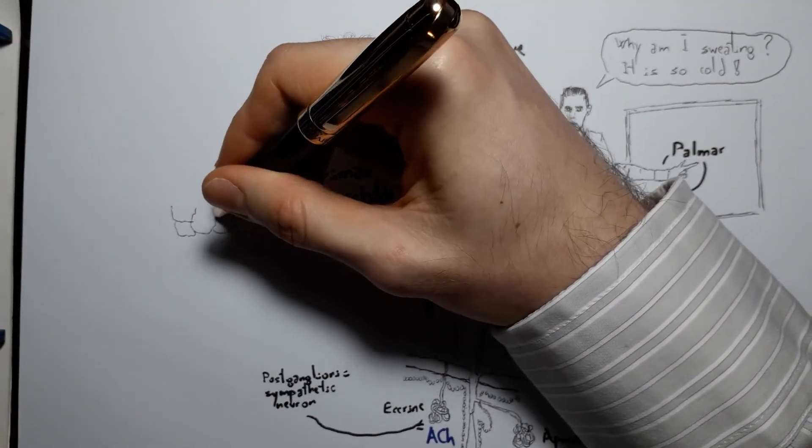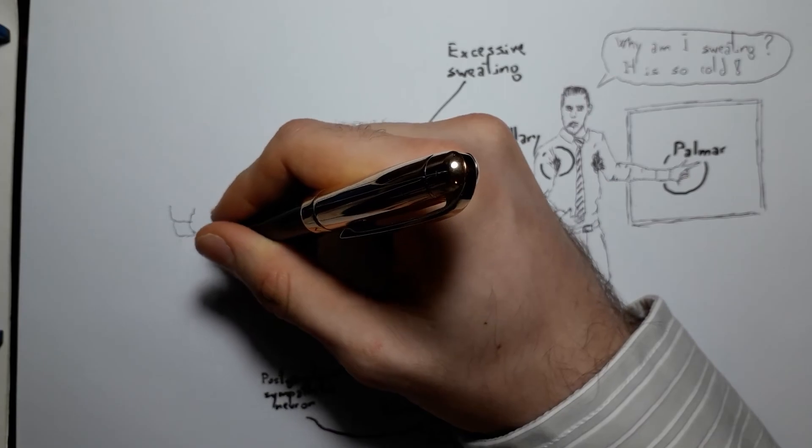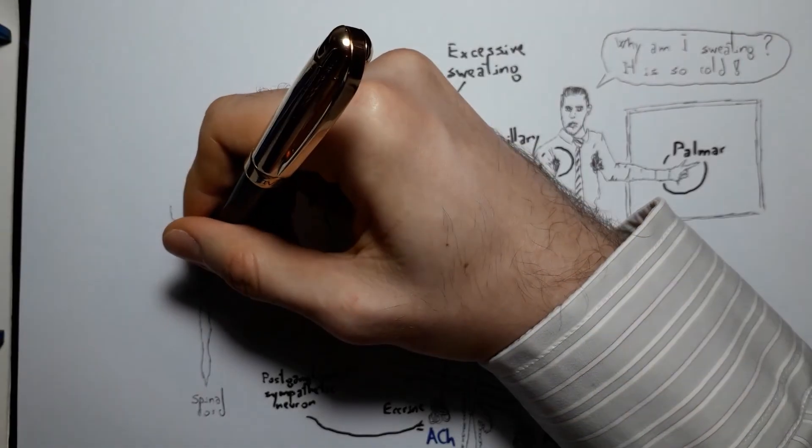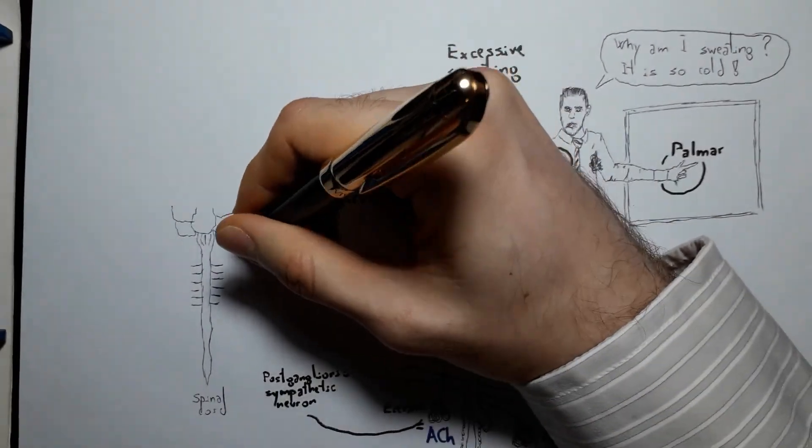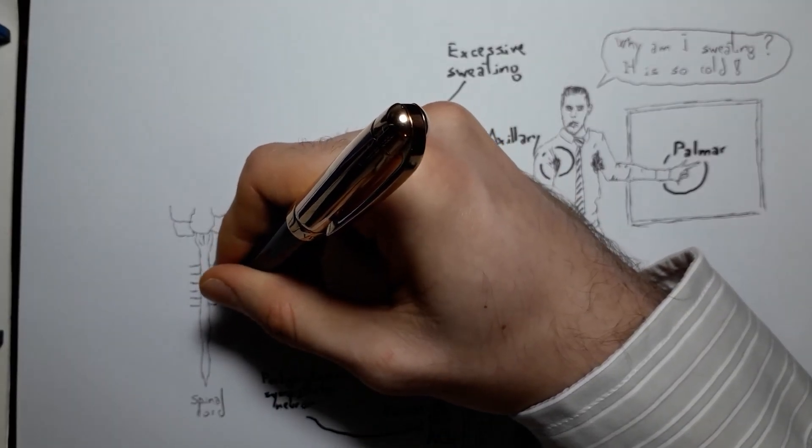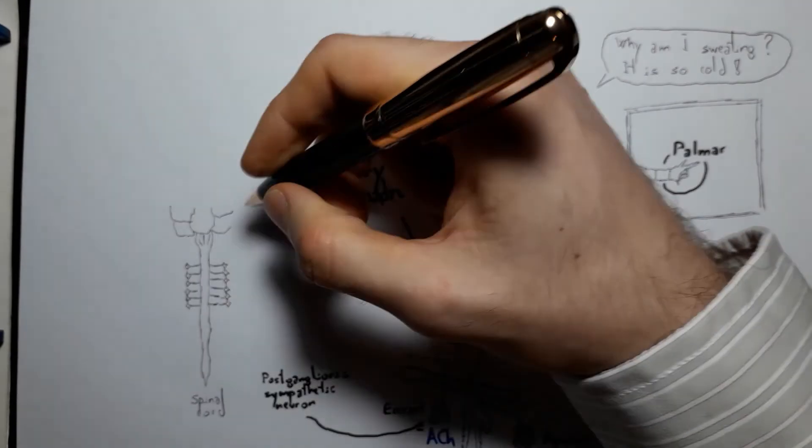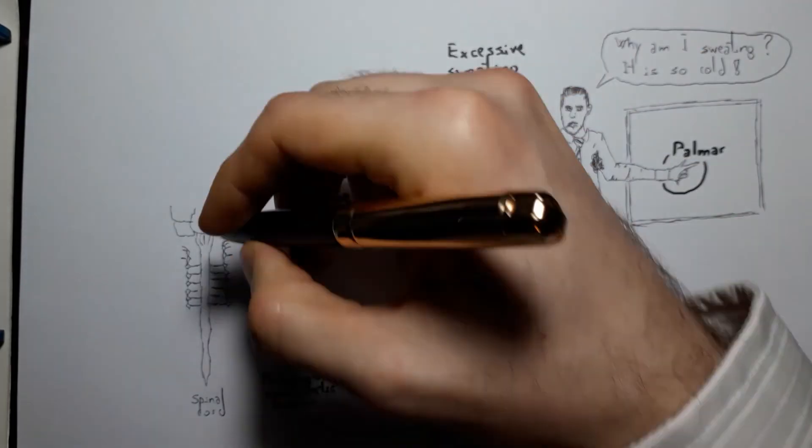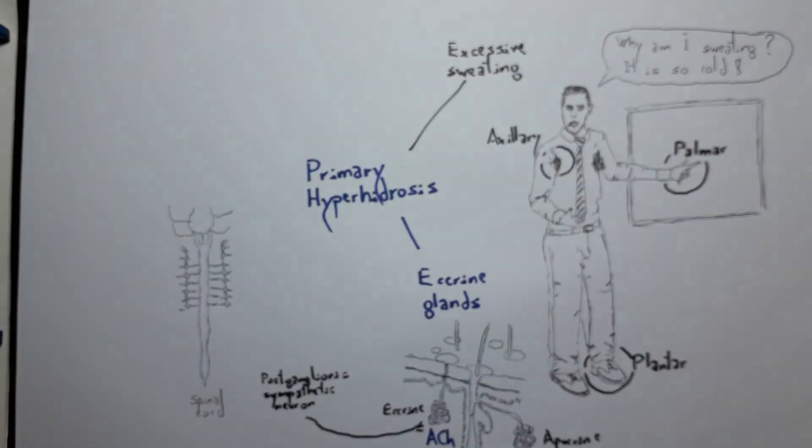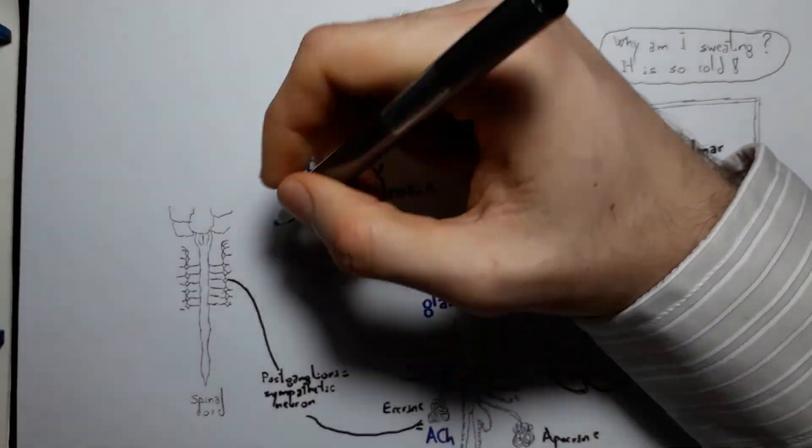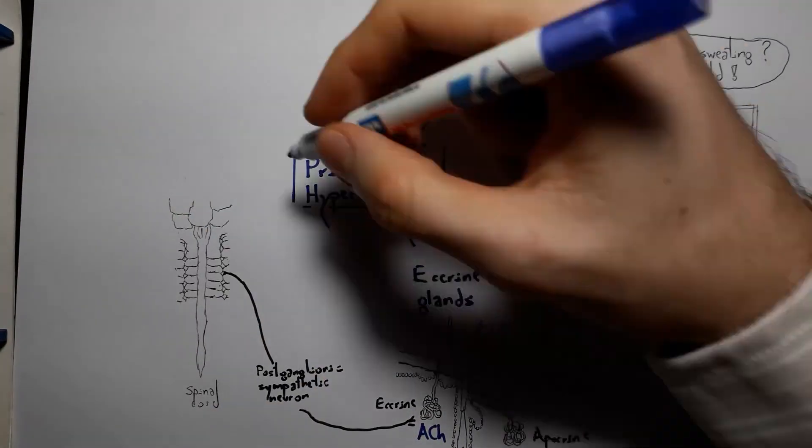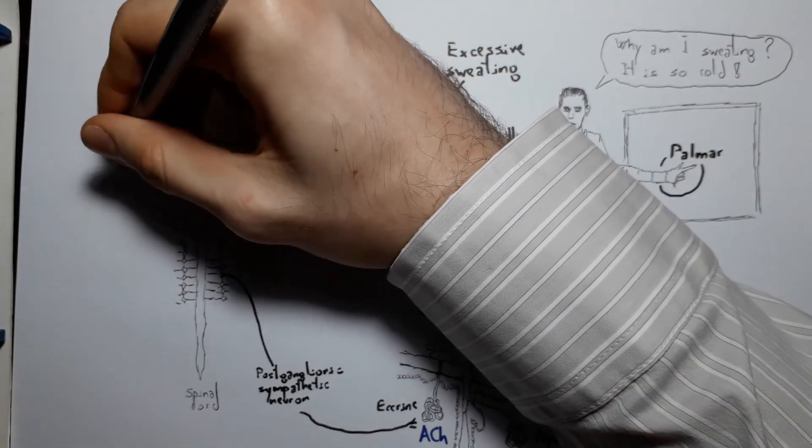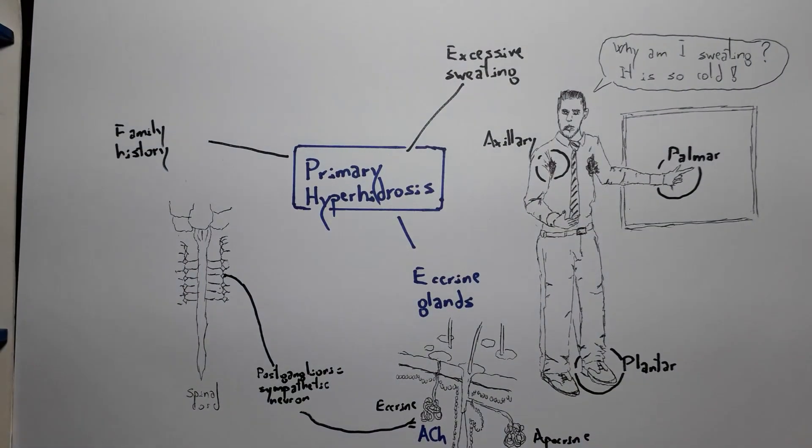Each sudomotor dermatome receives ipsilateral innervation from several adjacent segment levels. For example, T1 to T4 for the head, and T2 to T5 for the hands, or T3 to T6 for the armpits.